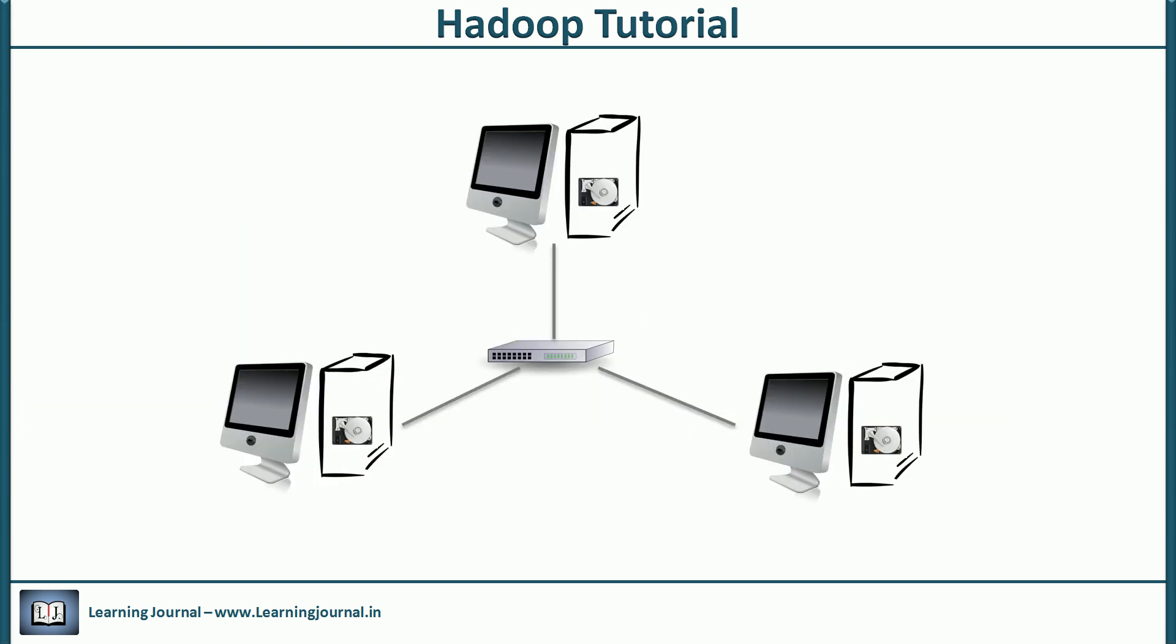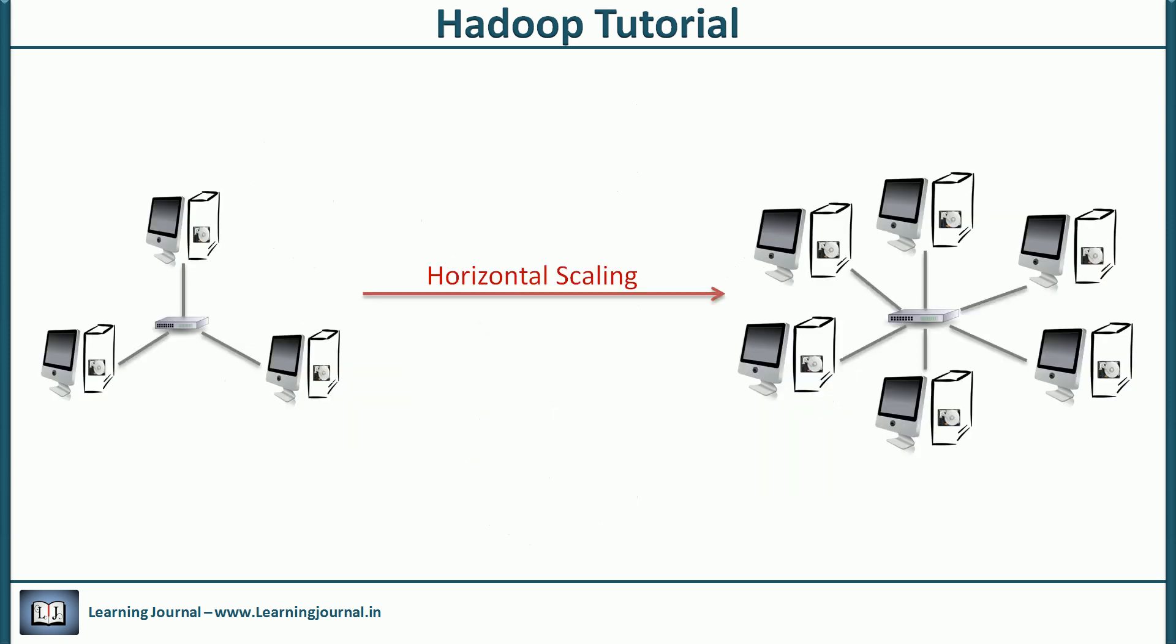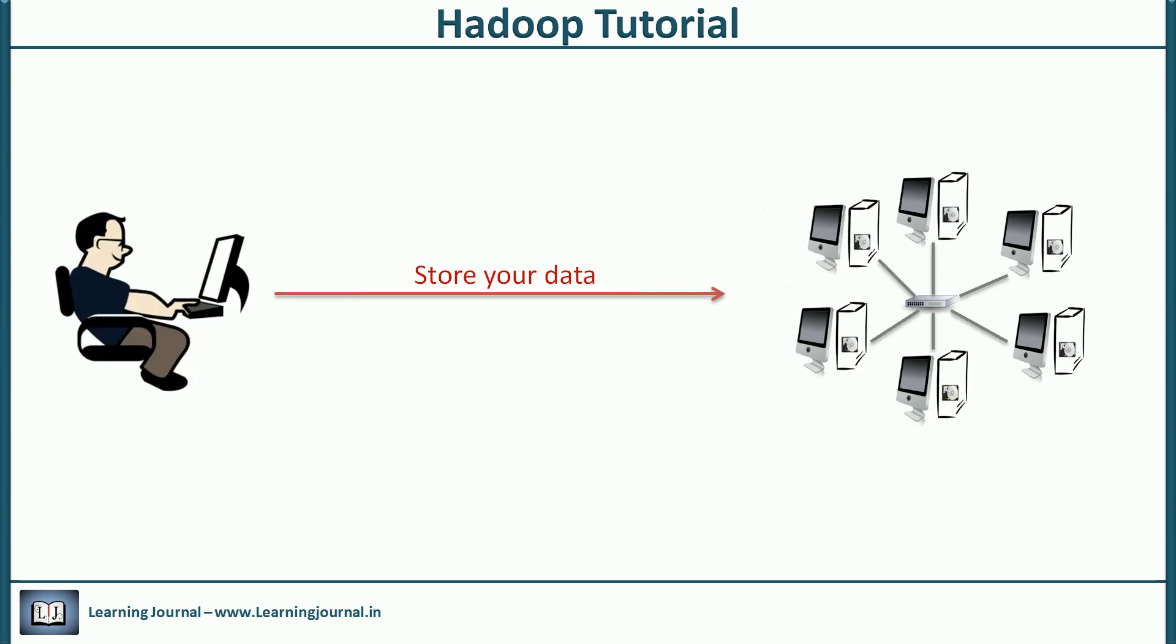The solution is simple. Instead of relying on a single large machine, use a network of several smaller machines. When you consume the combined storage capacity of your network, buy few more cheap computers and add them to the cluster. This approach is called horizontal scaling.